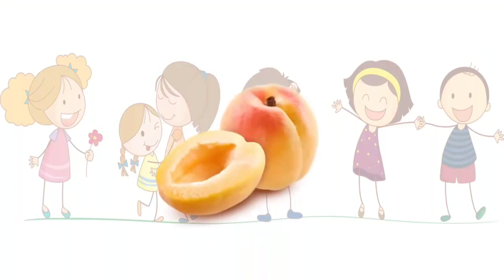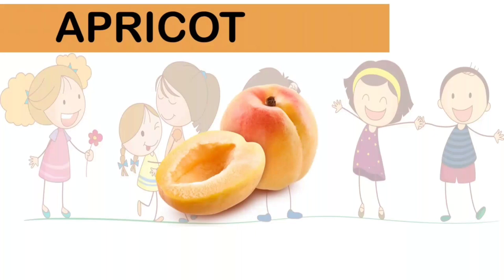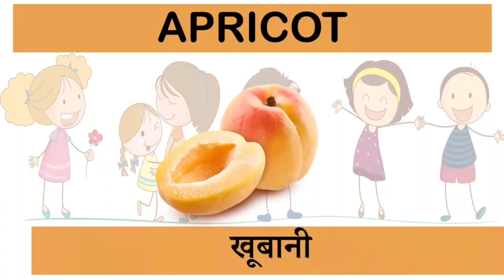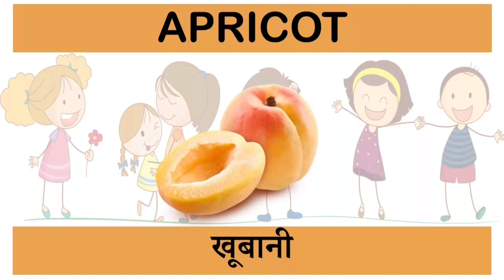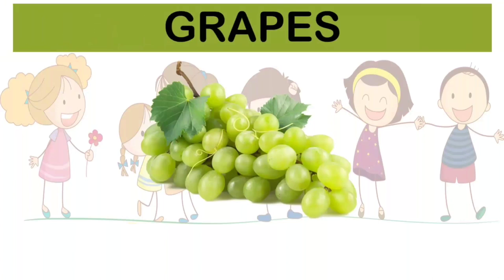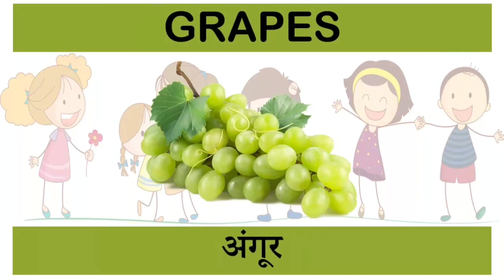This is pomegranate, yani anaar. This is apricot, yani kubani. This is grapes, yani angoor.